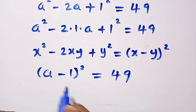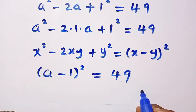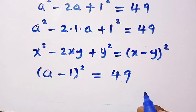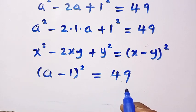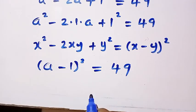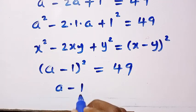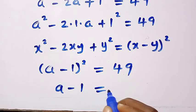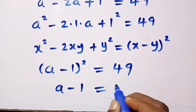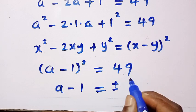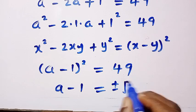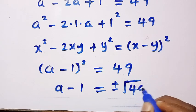Then let's take the square root of both sides. By squaring both sides we have a minus 1 equals - this becomes plus or minus when we take the square root of this side - and here it is 49.